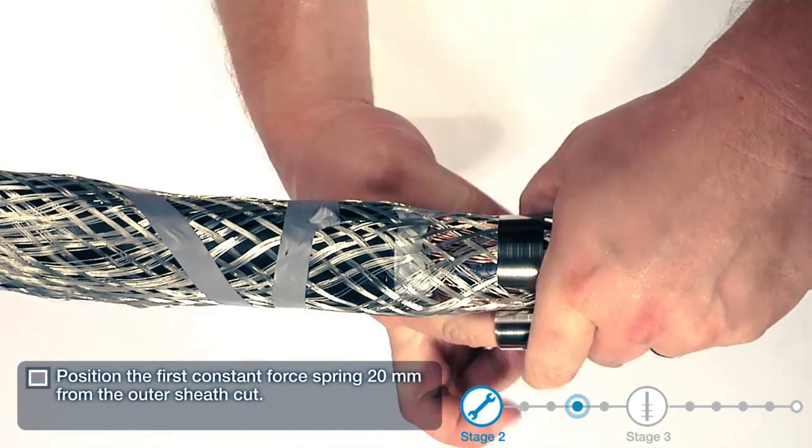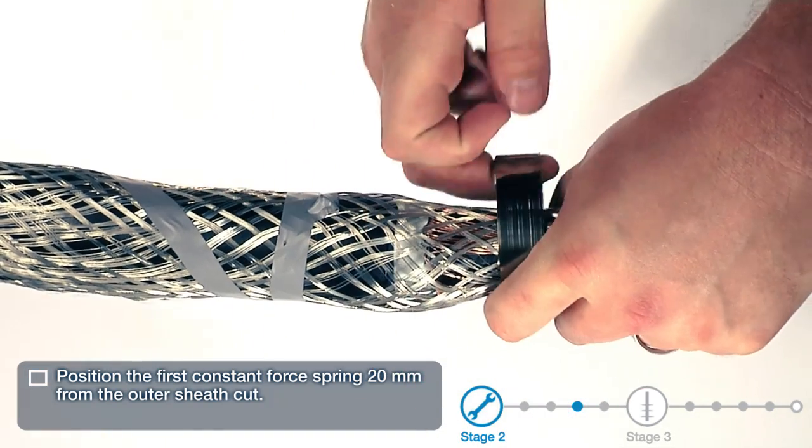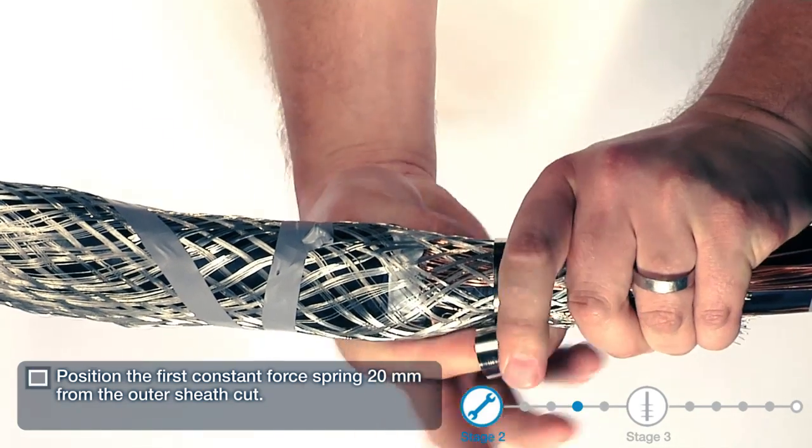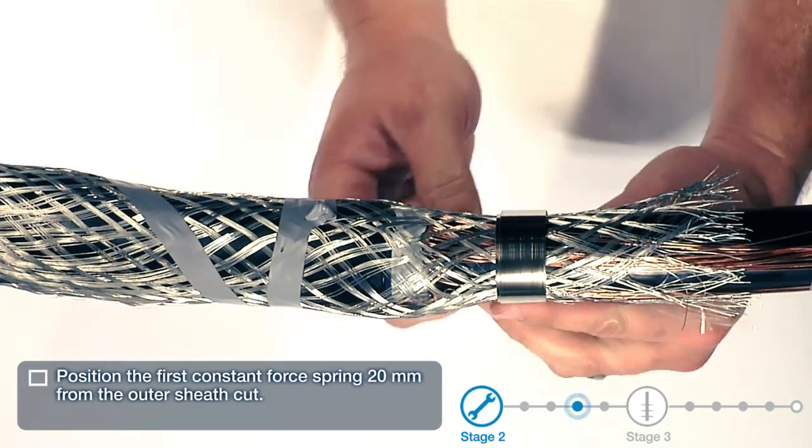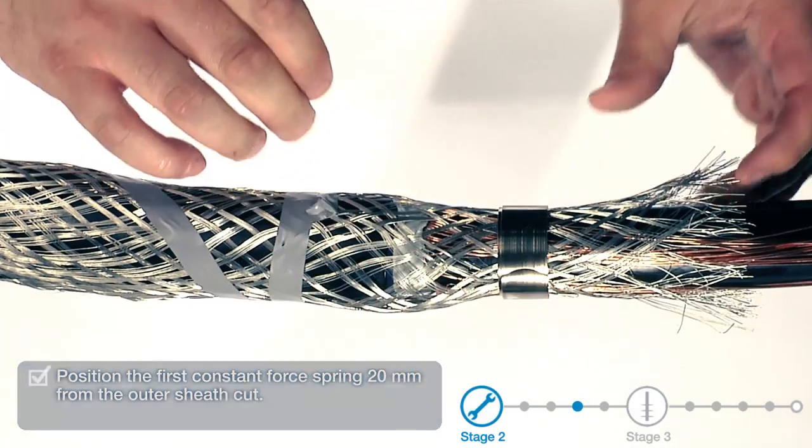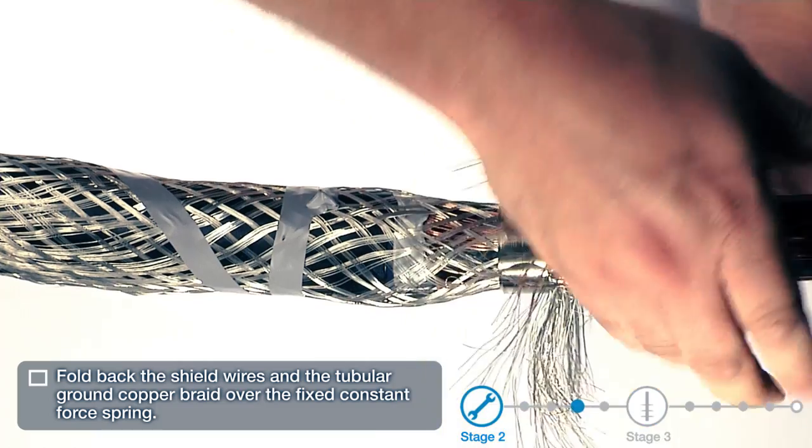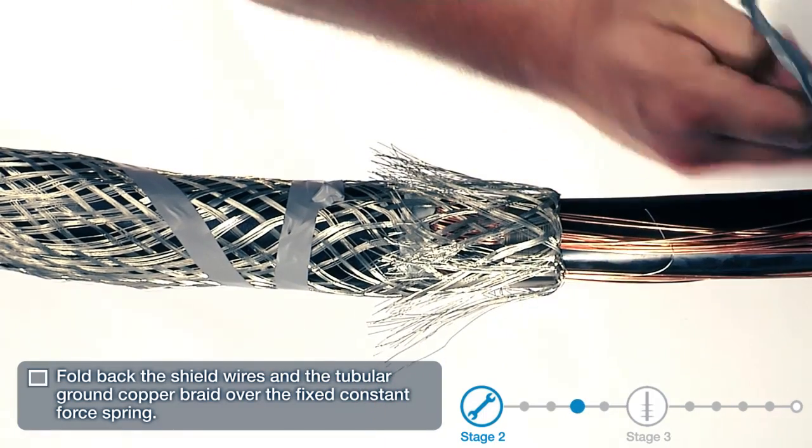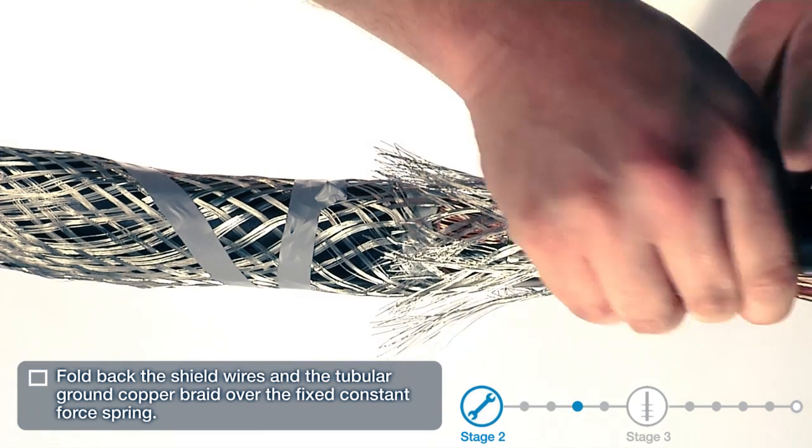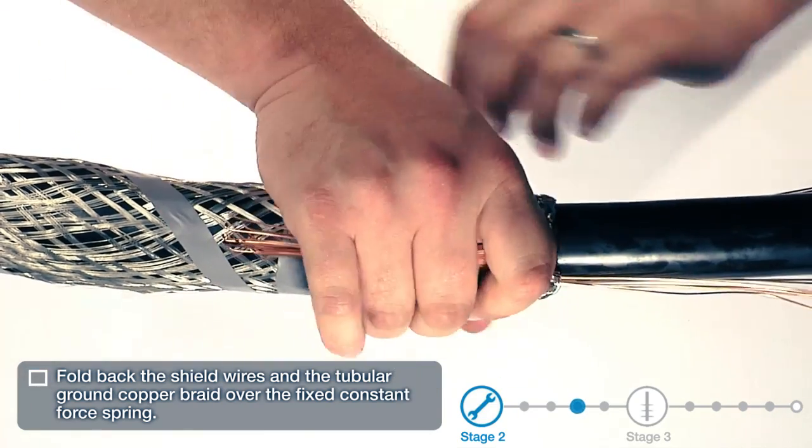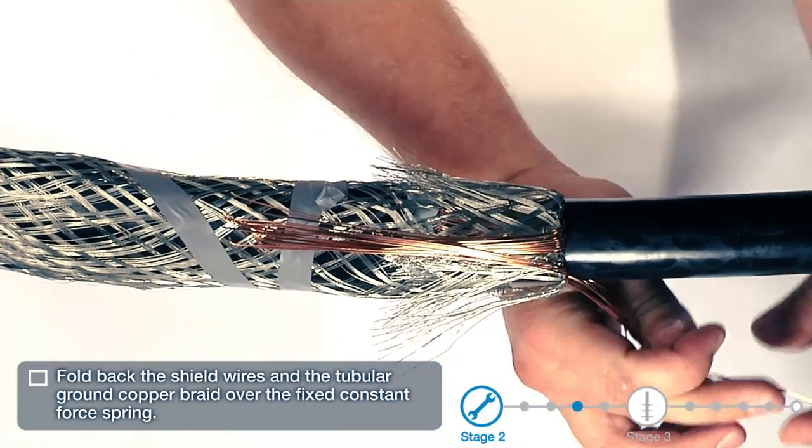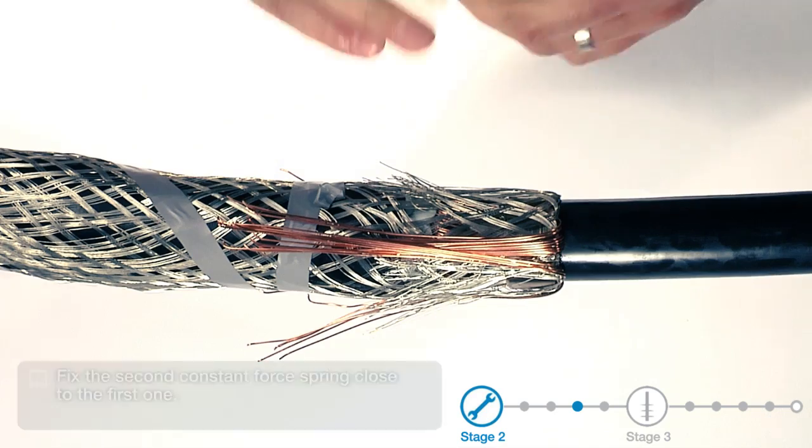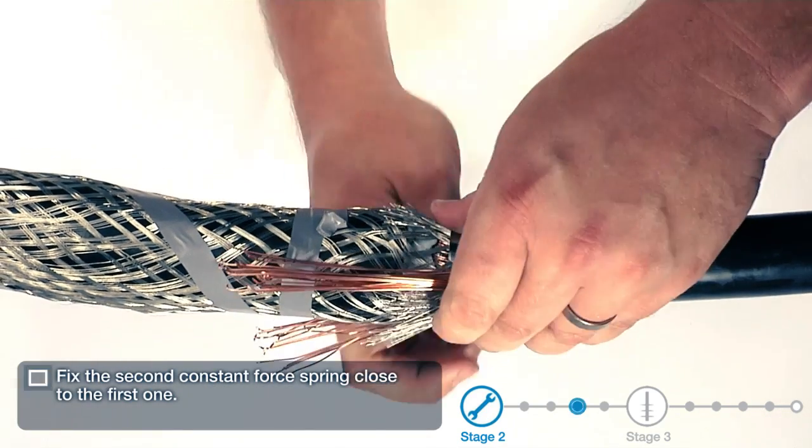Position the first constant force spring 20 millimeters from the outer sheath cut. Fold back the shield wires and the tubular ground copper braid over the fixed constant force spring. Fix the second constant force spring close to the first one.